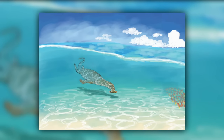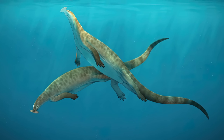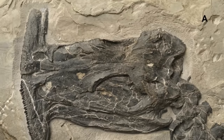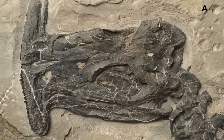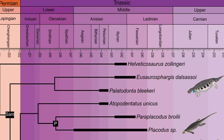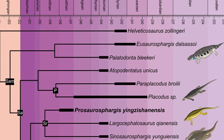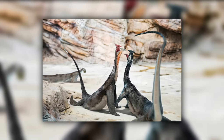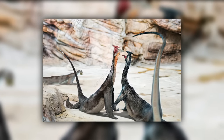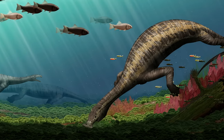Atopodentatus does not seem to have had adaptations for going back up onto land. It seems very highly adapted for aquatic life, and probably also gave birth to live young, though there is not much evidence. It is uncertain if it lived in groups, and it might have been a solitary grazer rather than a family-oriented animal. The sauropterygians are a group of fairly mysterious creatures that include most of the famous marine reptiles that appeared in the Triassic, and Atopodentatus would have been a fantastic early cousin of later creatures like Plesiosaurus and Liopleurodon.